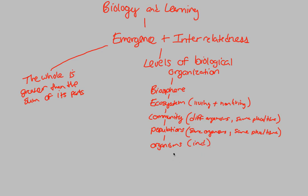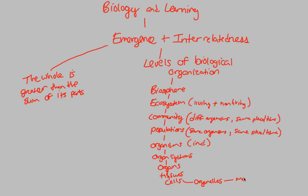Within an organism, we have organ systems — the circulatory system, the immune system, the musculoskeletal system, and so on. Within the organ system, we have organs. Organs are made up of tissues, tissues are made up of cells, cells are made up of organelles, and lastly our lowest level of classification: molecules. At the molecular level is where we'll start our journey in Rutgers General Biology.